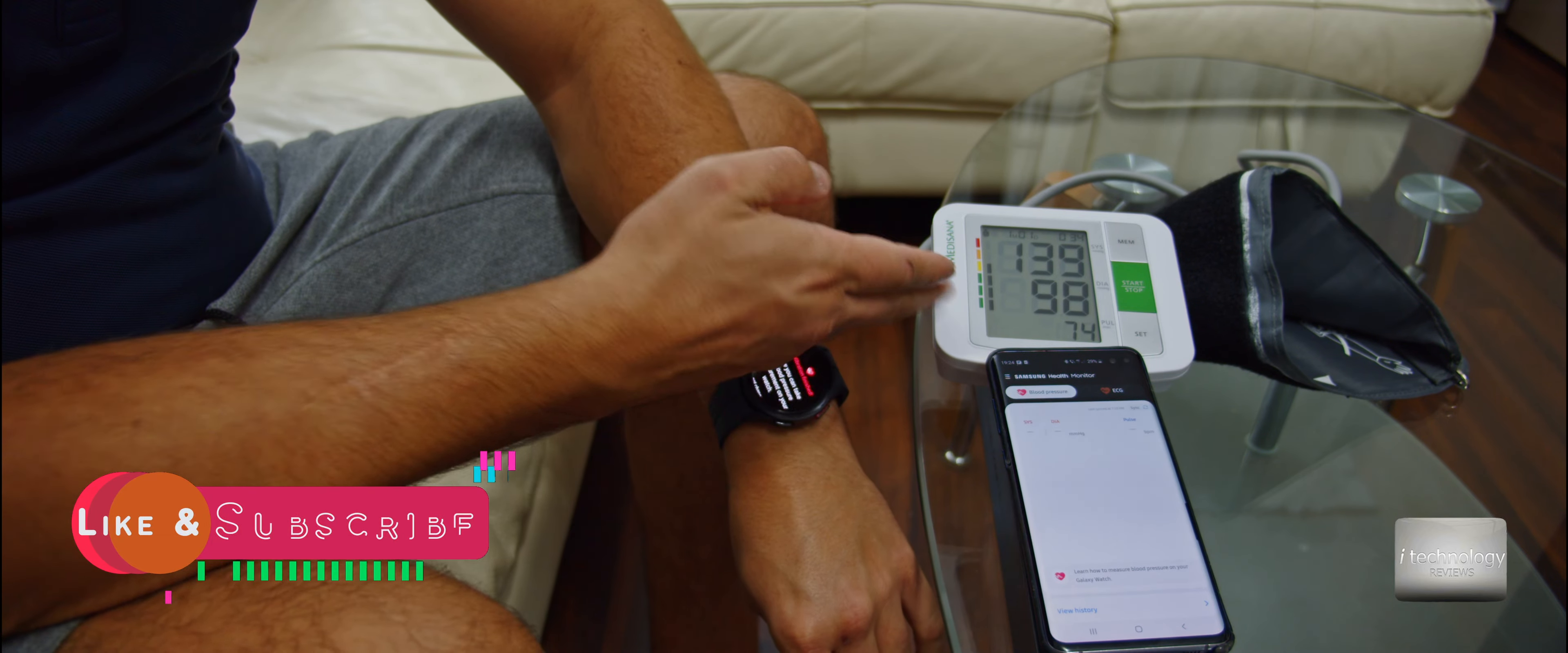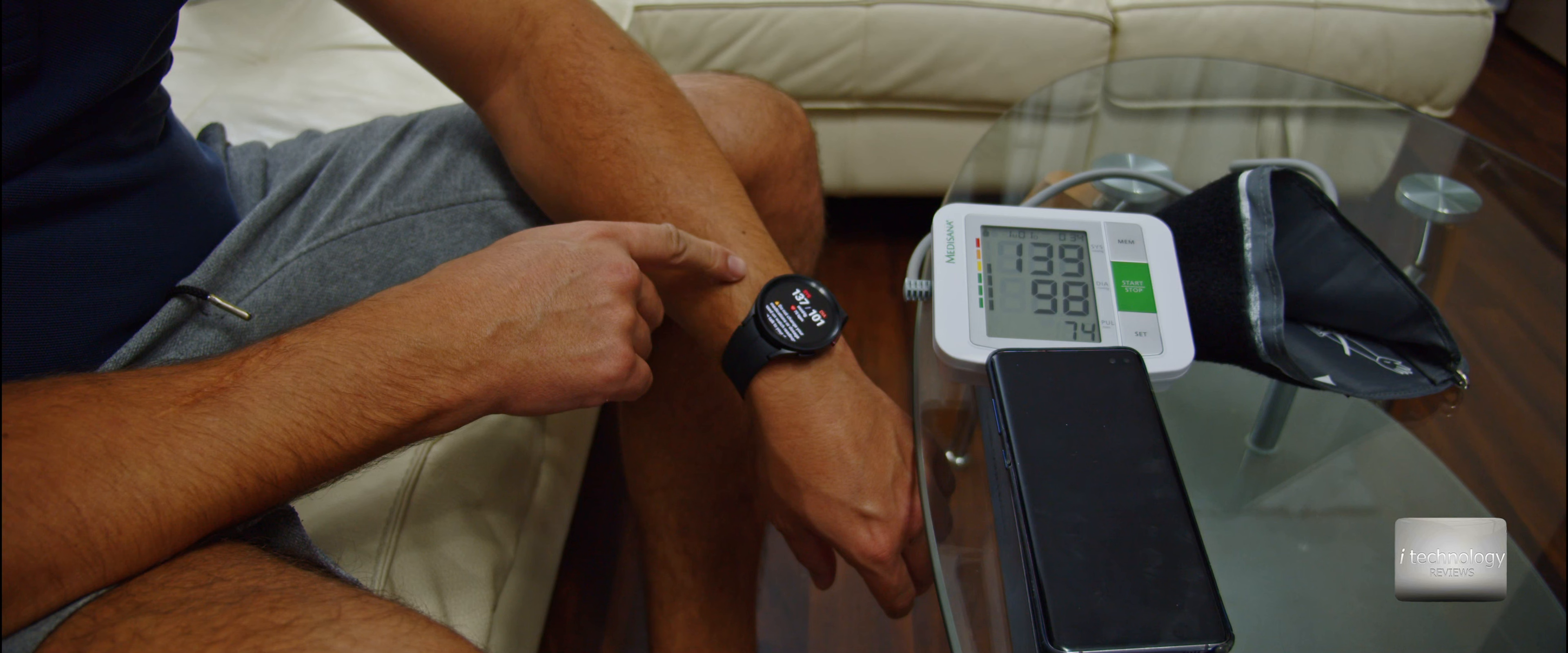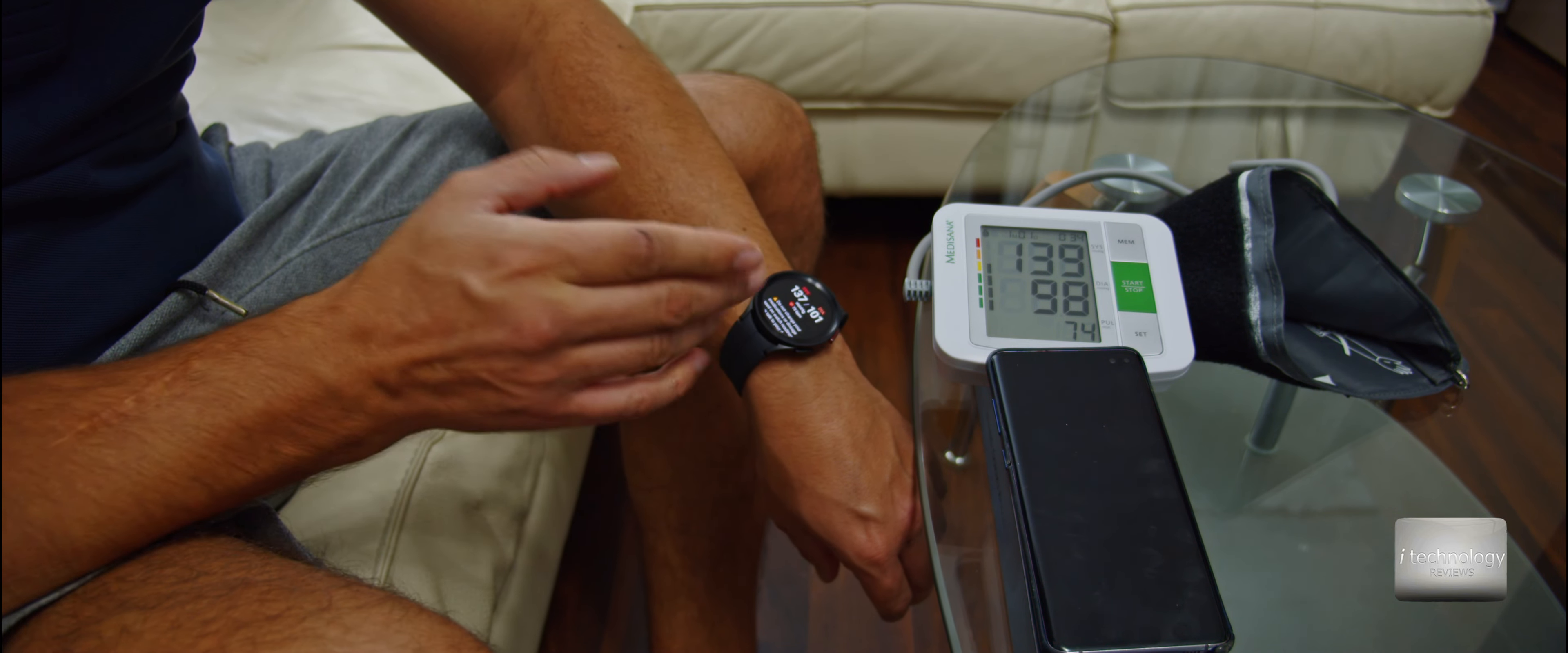Memorize these numbers and let's see if the watch will measure the blood pressure standalone now. Look guys, it's accurate. 137 by 101. This is how you will calibrate your smartwatch good and accurately.